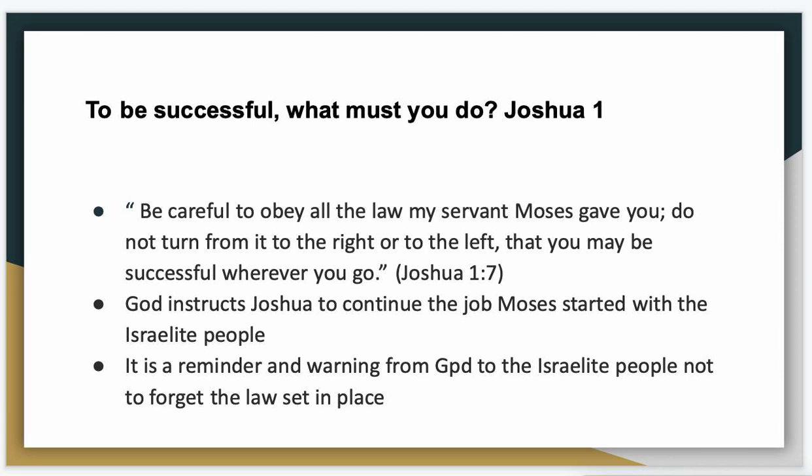God here is instructing Joshua to continue the job Moses started with the Israelite people. We know Moses was unable to go into the Promised Land, so he set his people free and Joshua becomes the new leader. God is speaking with Joshua saying: do not forget these laws — if you forget these laws you will be unsuccessful, but when you follow these laws you will be successful. He's reminding and warning the people of Israel, just as Moses did in his first speech in Deuteronomy.